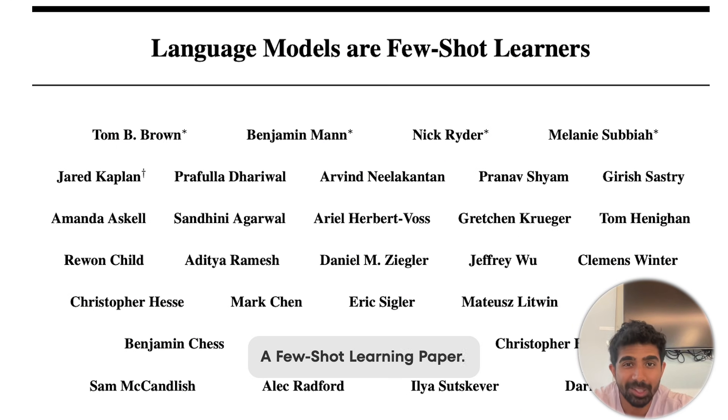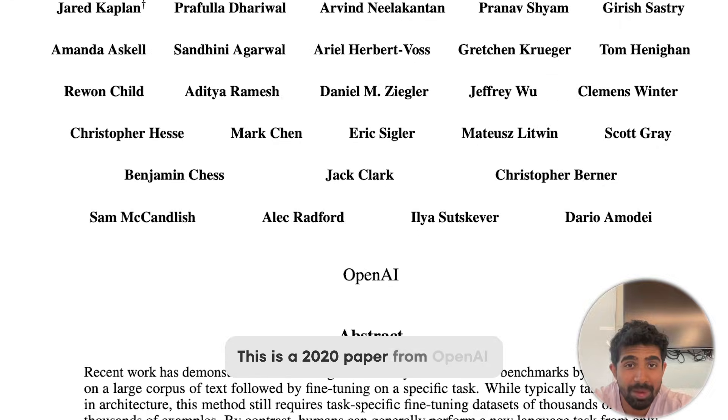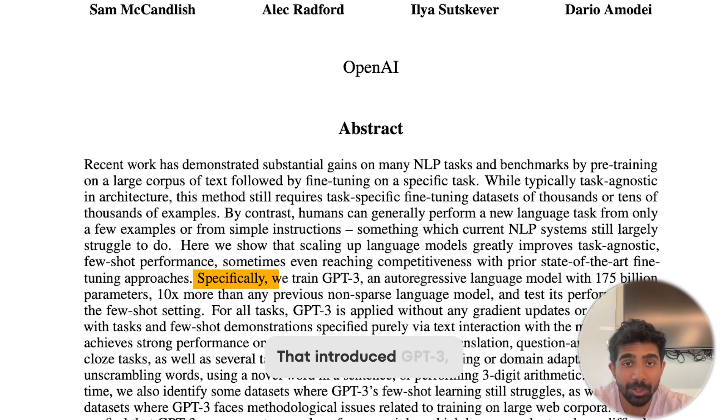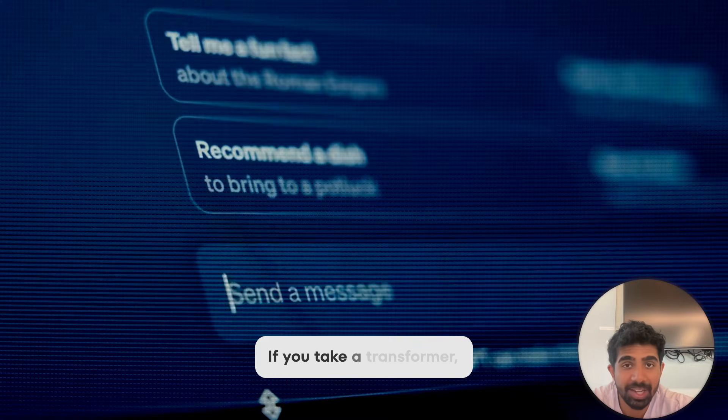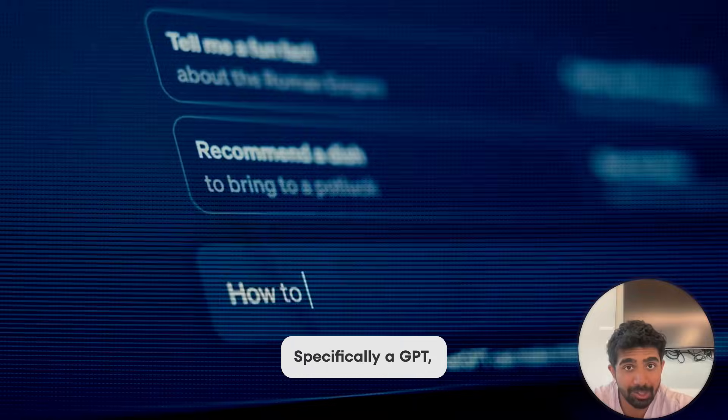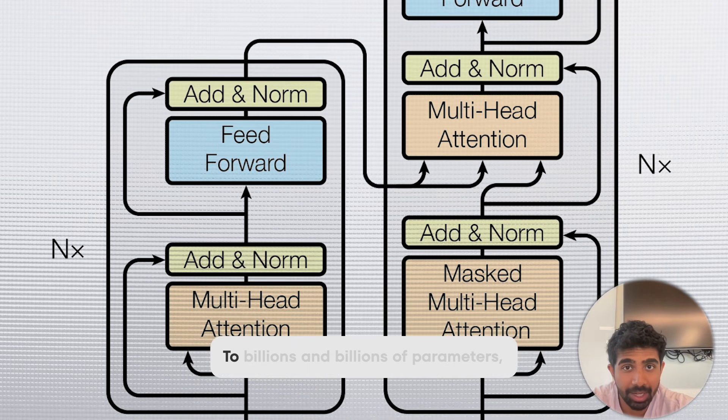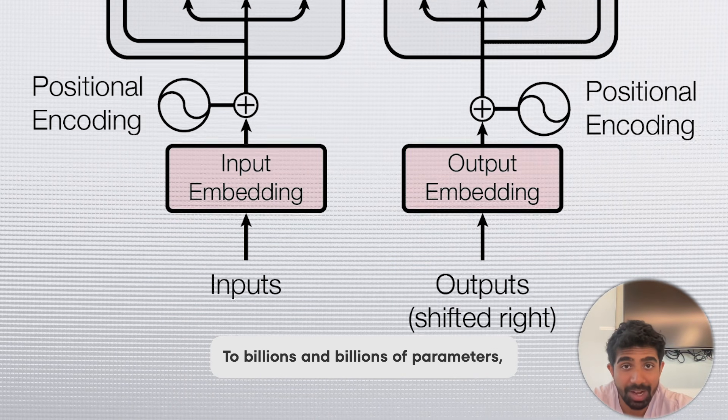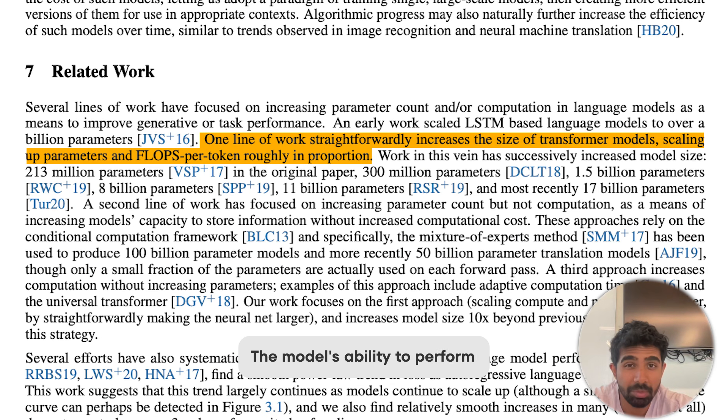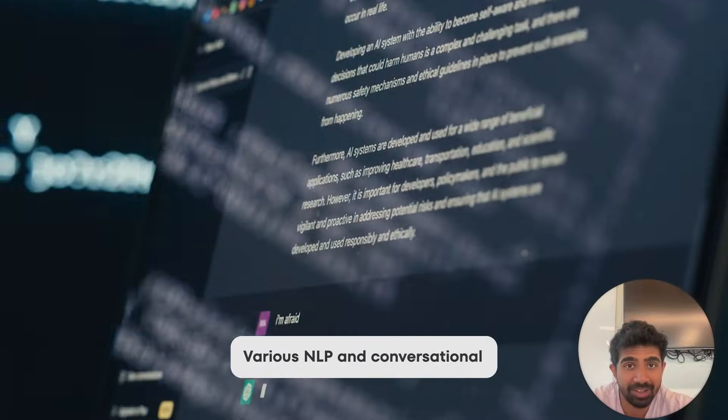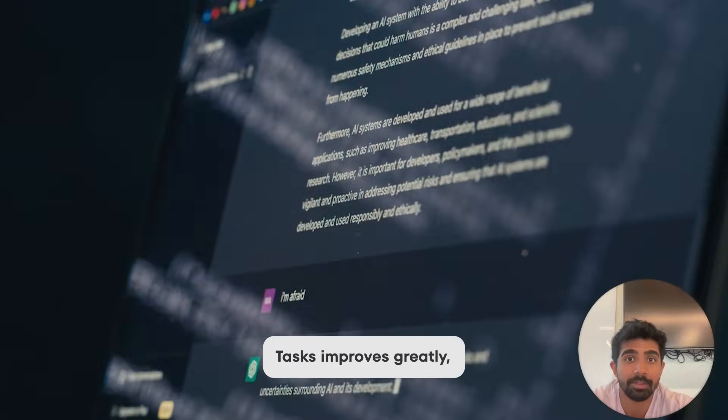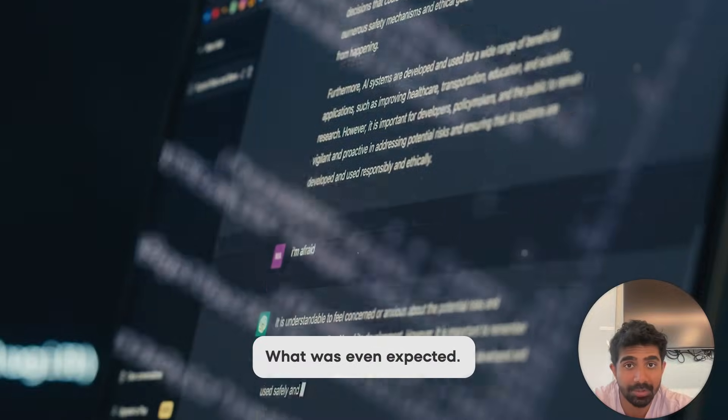Okay, the few shot learning paper. This is a 2020 paper from OpenAI that introduced GPT-3, which at the time was the most advanced LLM ever trained. The general idea is if you take a transformer, specifically a GPT, and if you scale it up to billions and billions of parameters, the model's ability to perform various NLP and conversational tasks improves greatly, far more than what was even expected.